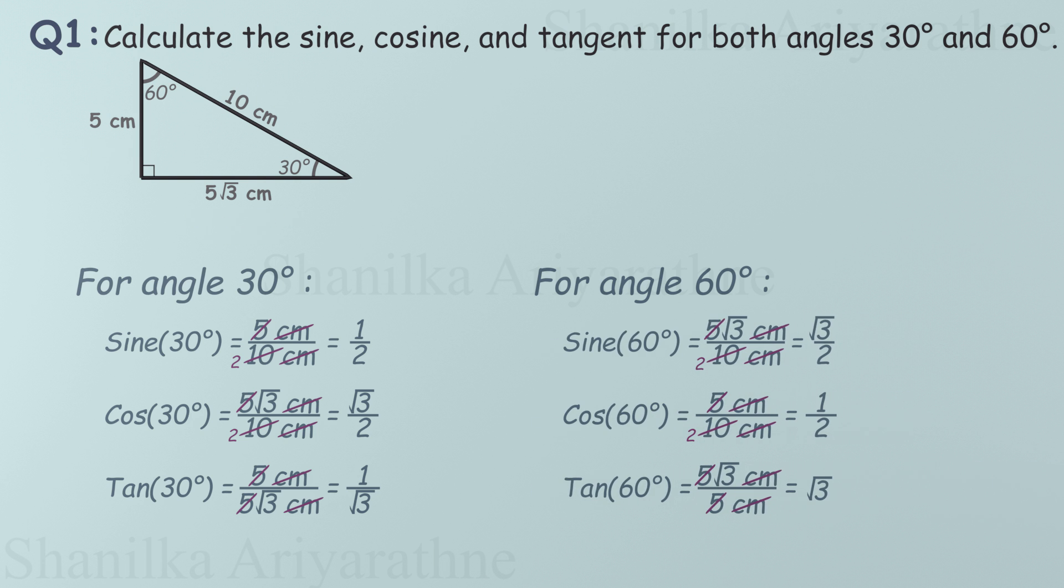And here's the key takeaway. You can calculate sine, cosine, and tangent for any angle in a right-angled triangle, if you know the side lengths.